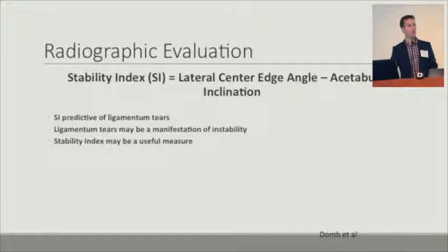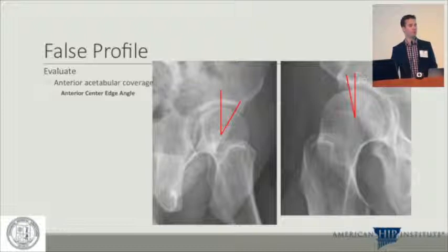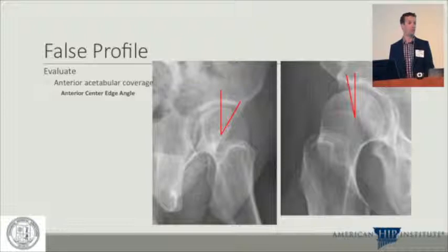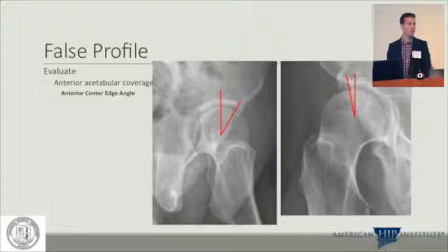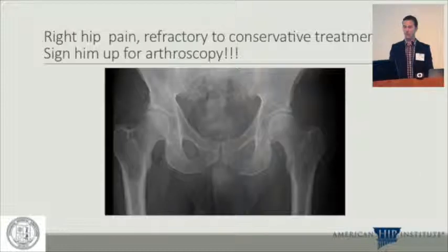For anterior undercoverage, the false profile view evaluates that best. I just saw a patient with a very normal lateral center edge angle but an anterior center edge angle of about 5 degrees and significant instability-type symptoms. That would have been missed without a false profile. This emphasizes the importance of obtaining that view.